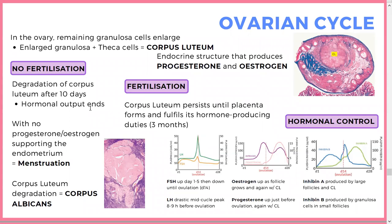Without progesterone and estrogen, menstruation occurs. The corpus luteum becomes the corpus albicans — 'albicans' meaning white in Latin, which is why it appears very white. If fertilization does happen, the corpus luteum persists until the placenta forms at around three months.